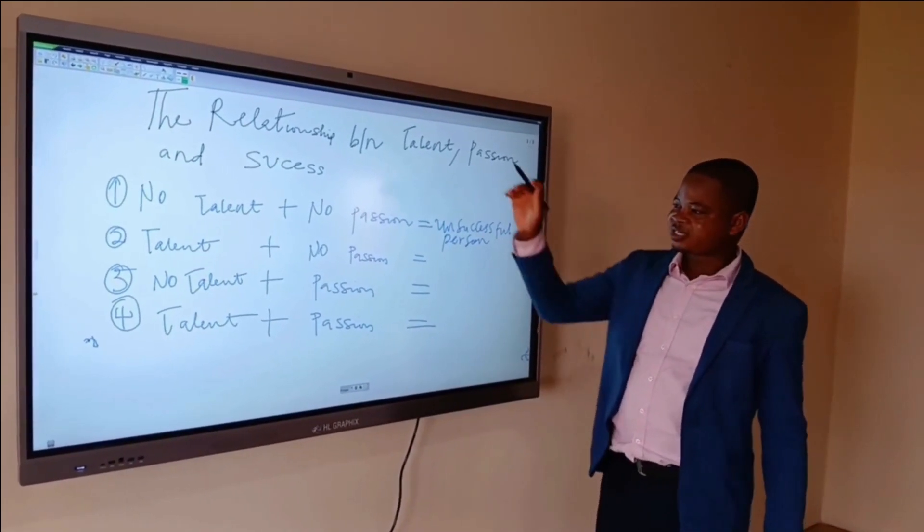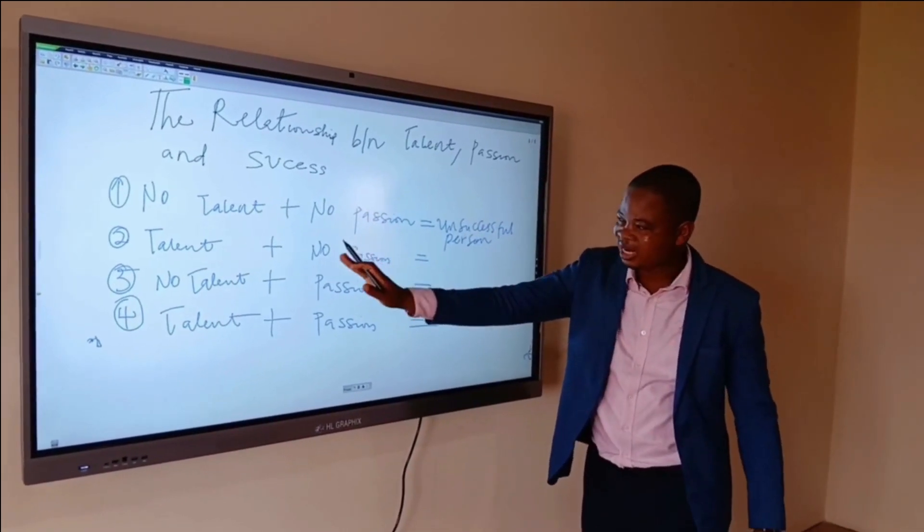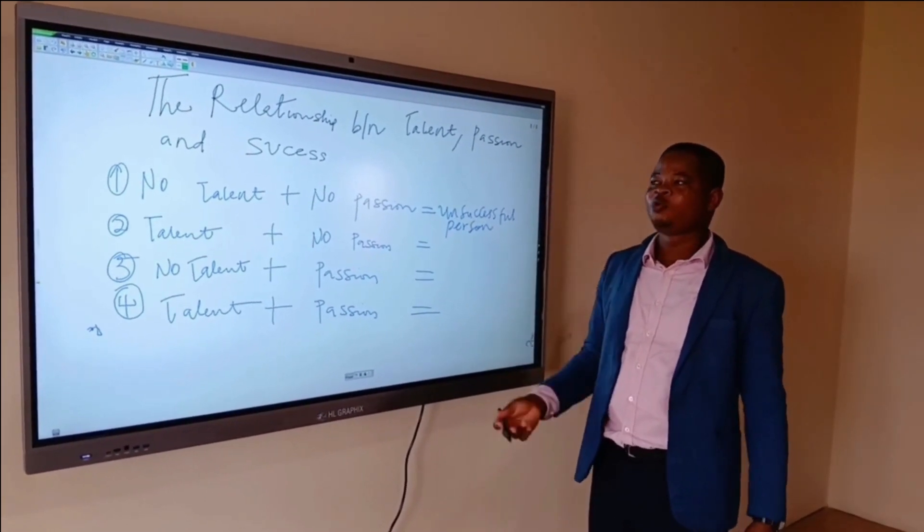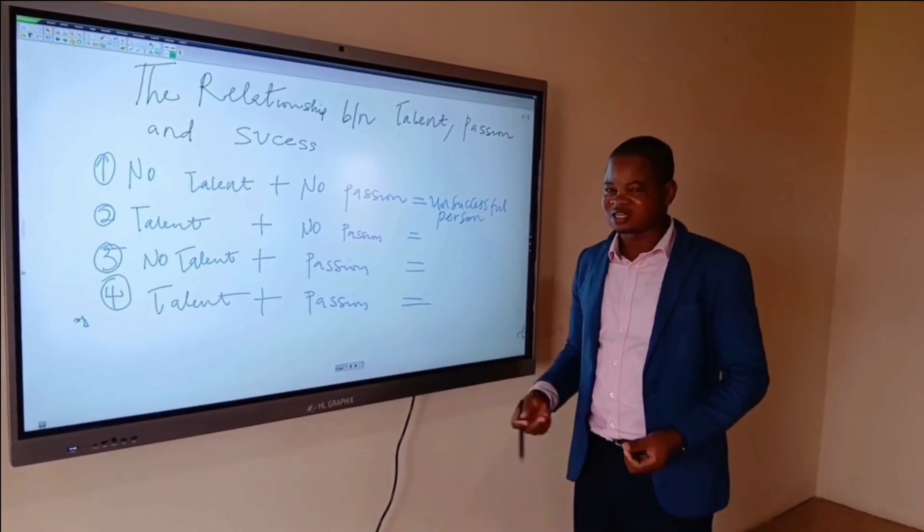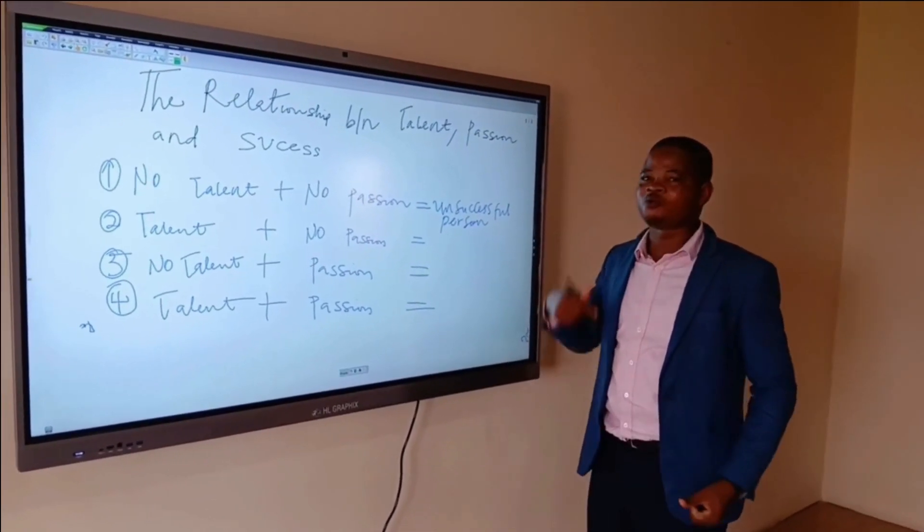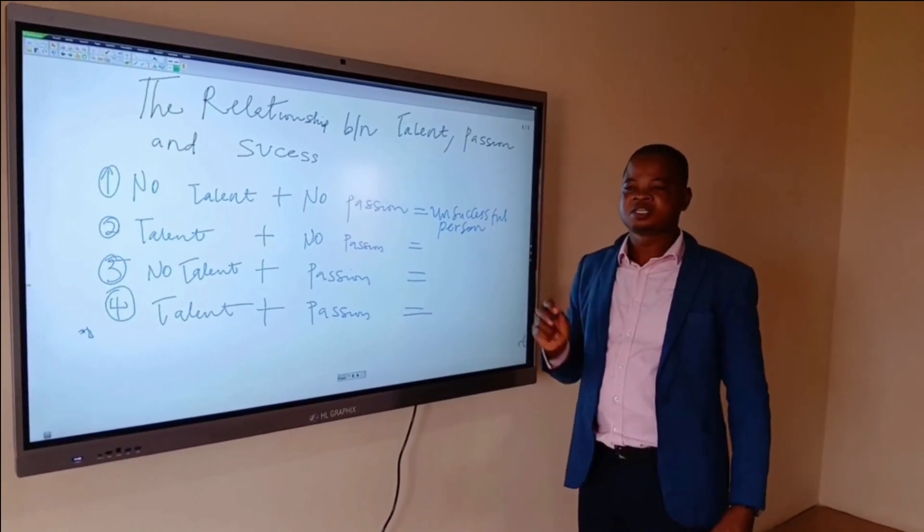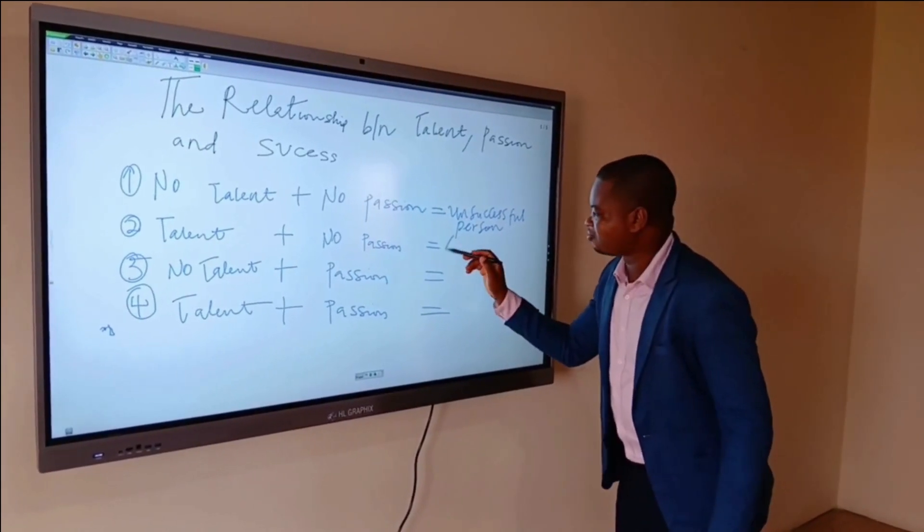Then, we have the second category. The second category are the people that have talent but they have no passion for whatever they are doing. So, anyone who has a talent in something but doesn't have the passion. In other words, you don't have the energy that will drive him to execute whatever work he has put in him. Such a person will become what we call an average person.